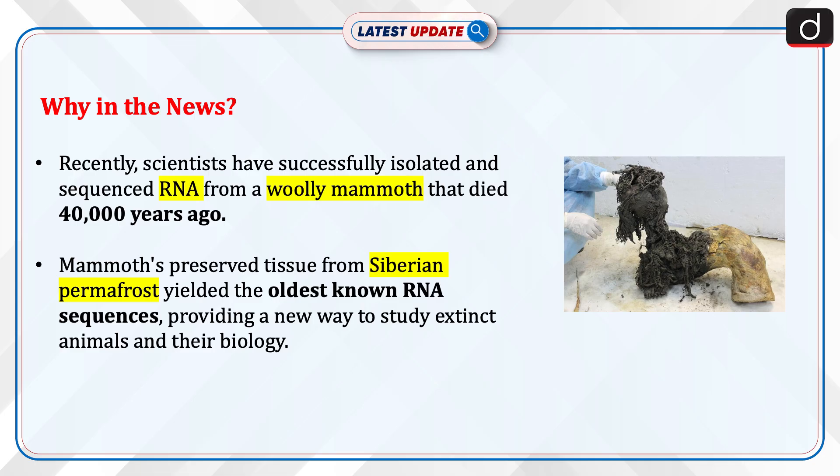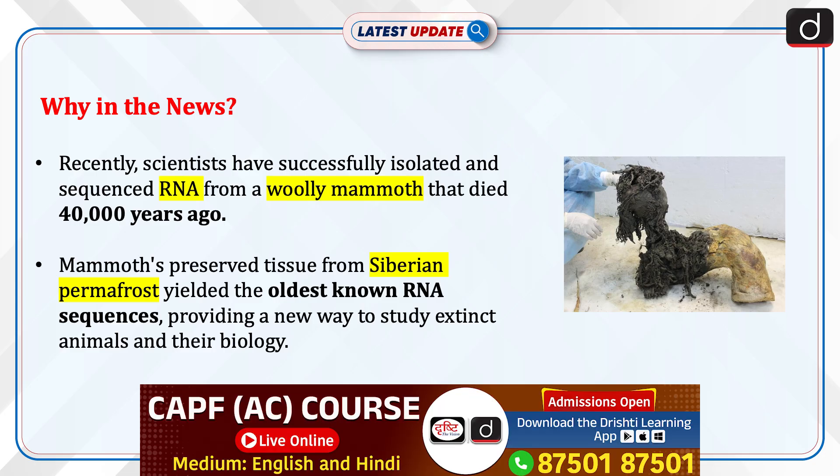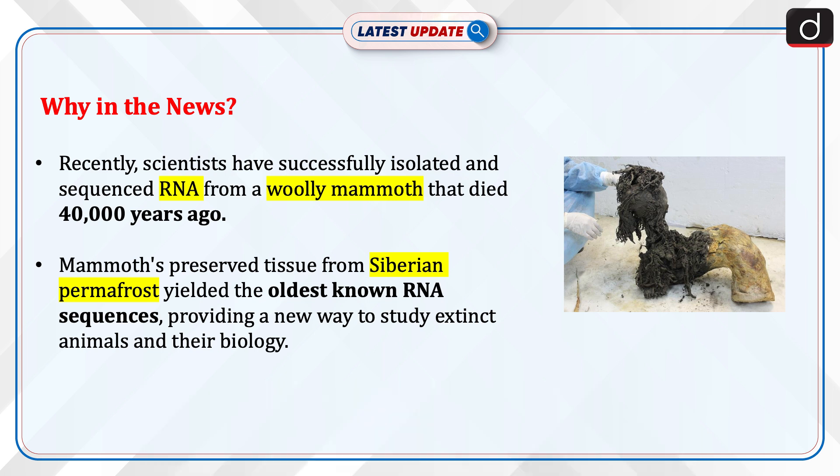Recently, scientists have successfully isolated and sequenced RNA from a woolly mammoth that died 40,000 years ago. The mammoth's preserved tissue from Siberian permafrost yielded the oldest known RNA sequences, providing a new way to study extinct animals and their biology.